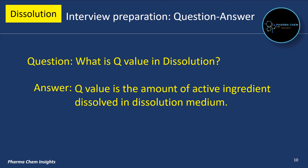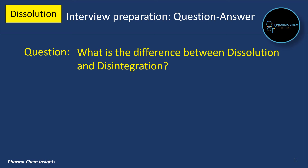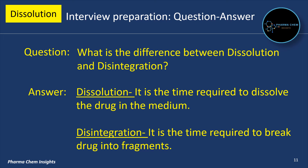What is the Q value in dissolution? The Q value is the amount of active drug ingredient dissolved in the dissolution medium. What is the difference between dissolution and disintegration? Dissolution is the time required to dissolve the drug in the medium, while disintegration is the time required to break the drug into fragments.